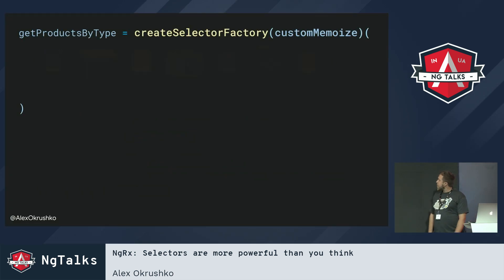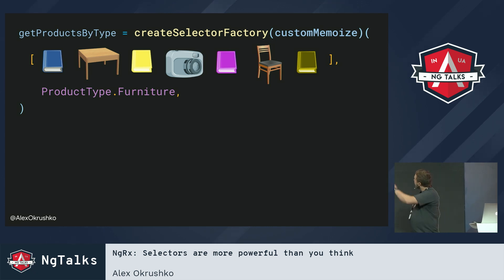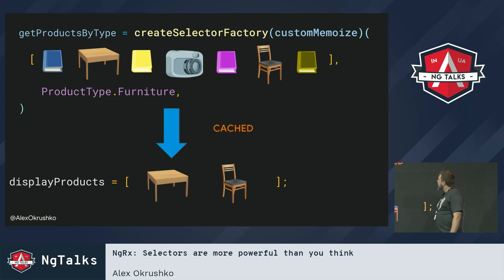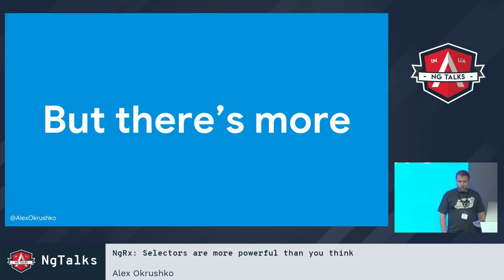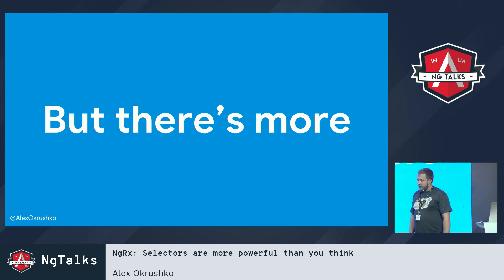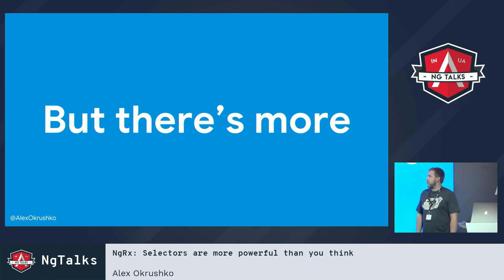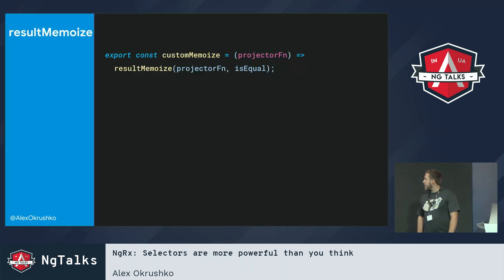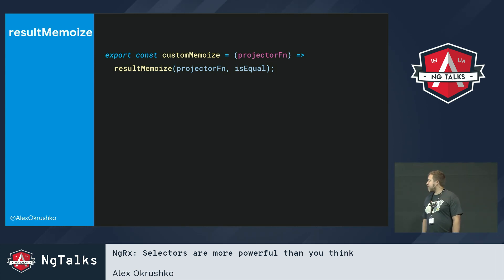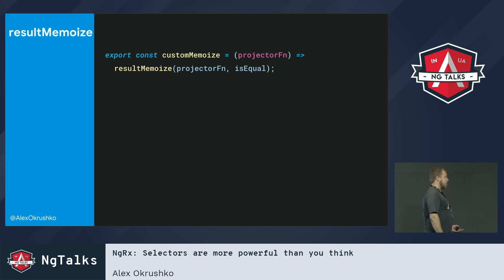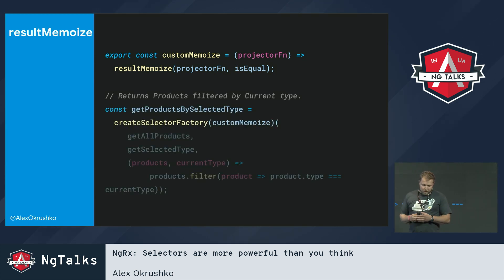So here again is createSelectorFactory — we get a cached result back. I noticed I had to write this custom memoize function quite often and didn't want to recreate it every time, so I decided to push it to the NgRx platform itself. As of two weeks ago, we now have another helper function within NgRx you can use directly — it's called ResultMemoize. It takes a projector function and our equality comparison function, and you use it the same way as the custom memoize.